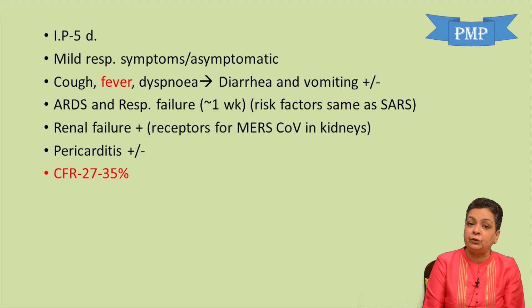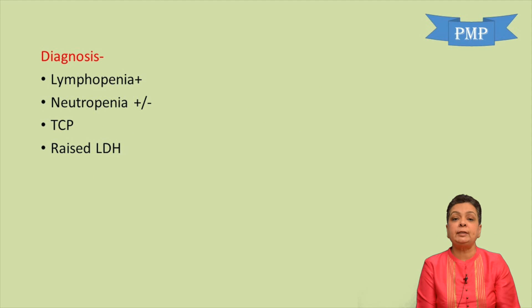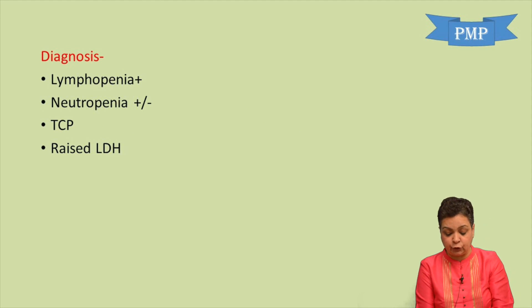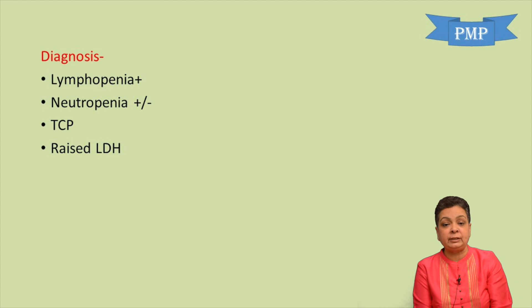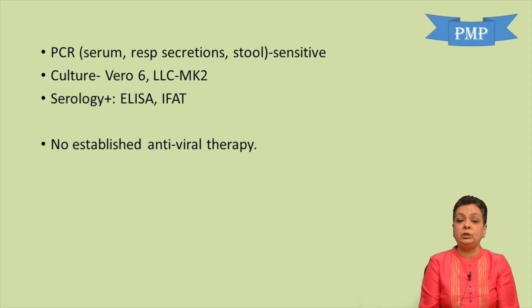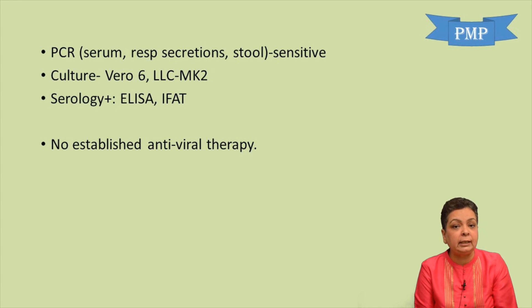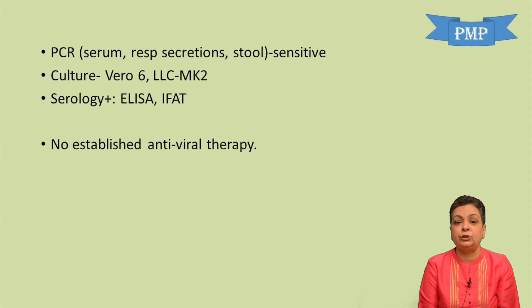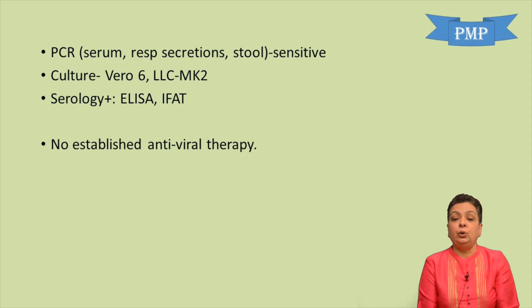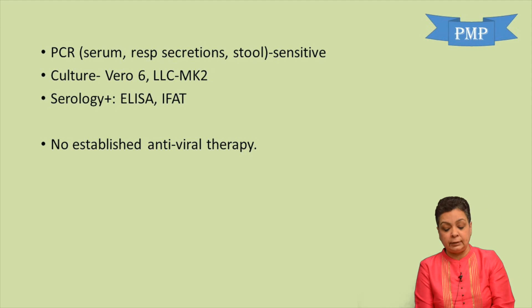Fatality rates for MERS range from 27 to 35%. Laboratory findings include lymphopenia, neutropenia, thrombocytopenia, and raised LDH. Specific diagnosis is done using serum, respiratory secretions, or stool specimens by PCR. The virus can be cultured on monkey kidney or Vero cell lines, and serology can detect antibodies in serum. No established antiviral therapy exists, and a vaccine is under development.